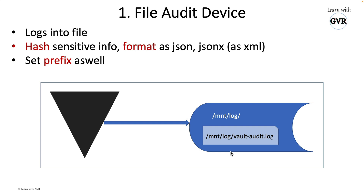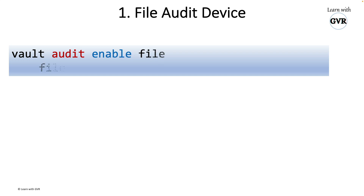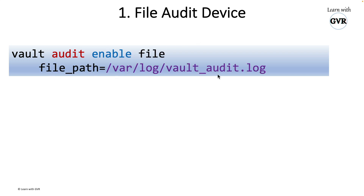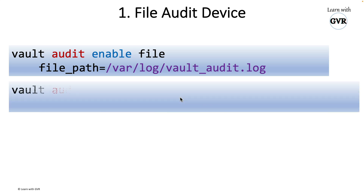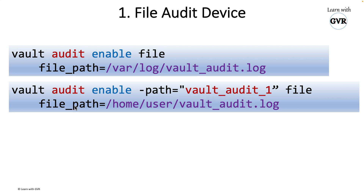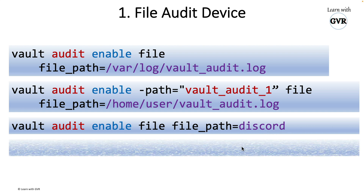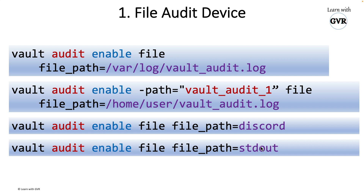You can also configure a prefix for the log file. The command to enable a file audit device is: 'vault audit enable' with 'type=file' and 'file_path' pointing to your desired location. You can specify various paths along with the file path. For standard output (useful during testing), use 'stdout' as the file path. All these commands are available in the official documentation.